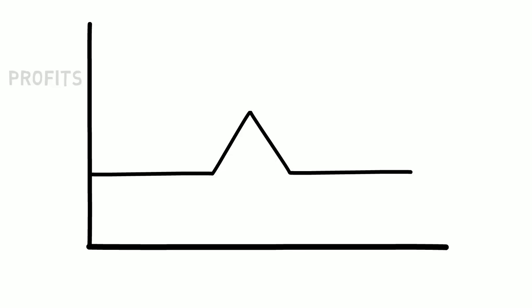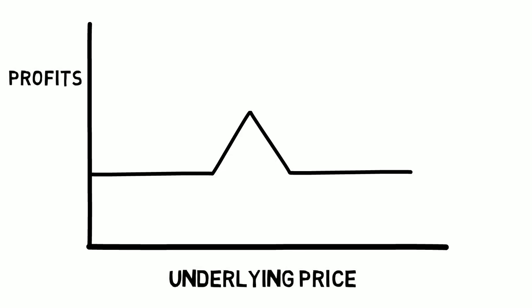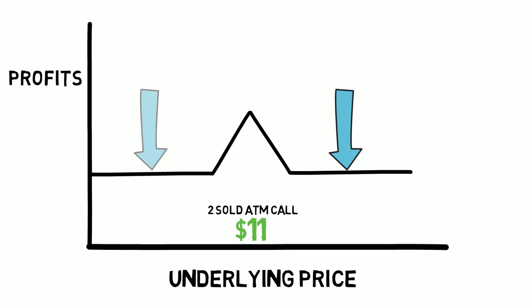If you break down this strategy, the meat of it is in the two at-the-money calls we're selling. The two other calls — the upper and lower parts — are basically just there to reduce risk and minimize loss. If we simply were to sell two at-the-money calls, we would be exposing ourselves to unlimited losses and limited profits. The butterfly ensures we reduce our risk while maintaining some potential profitability.